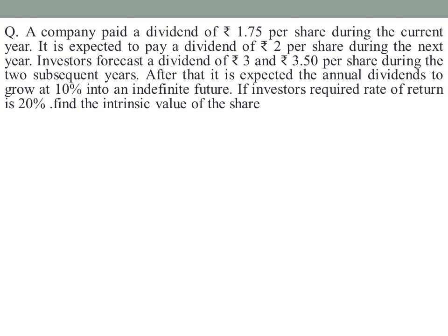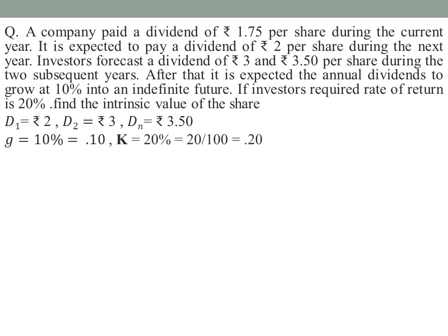The dividend rates for the present value calculation are: D1 = Rs. 2, D2 = Rs. 3, and D3 (Dn) = Rs. 3.50, covering the 3-year extraordinary growth period. The constant growth rate is 10%, which is converted to 0.10. The investor's required rate of return and discount rate is 20%, which is converted to 0.20.